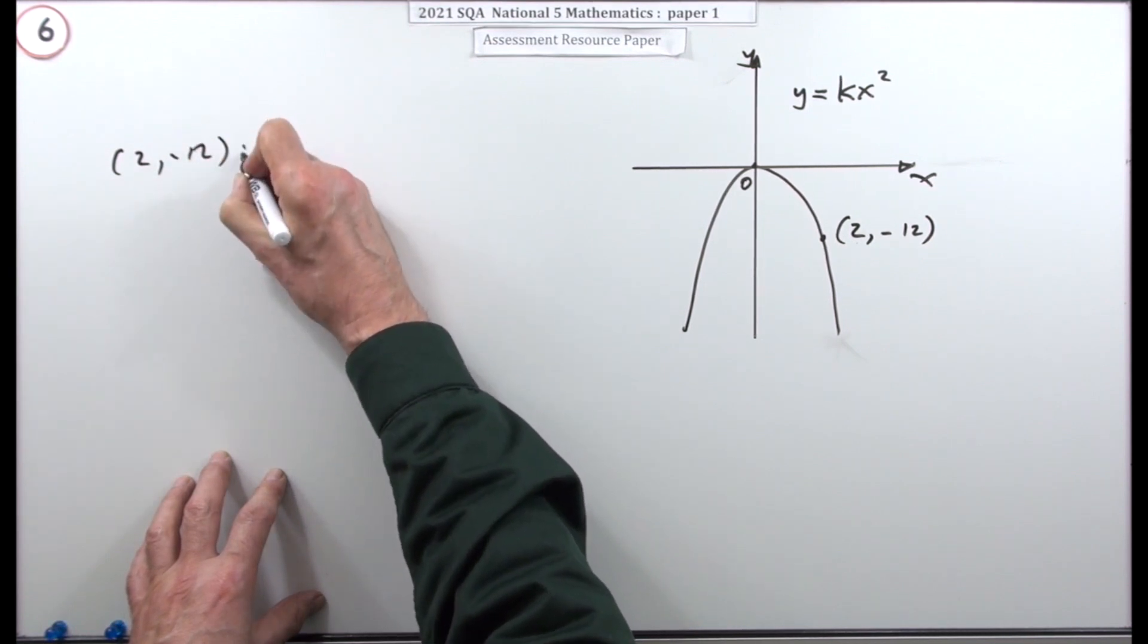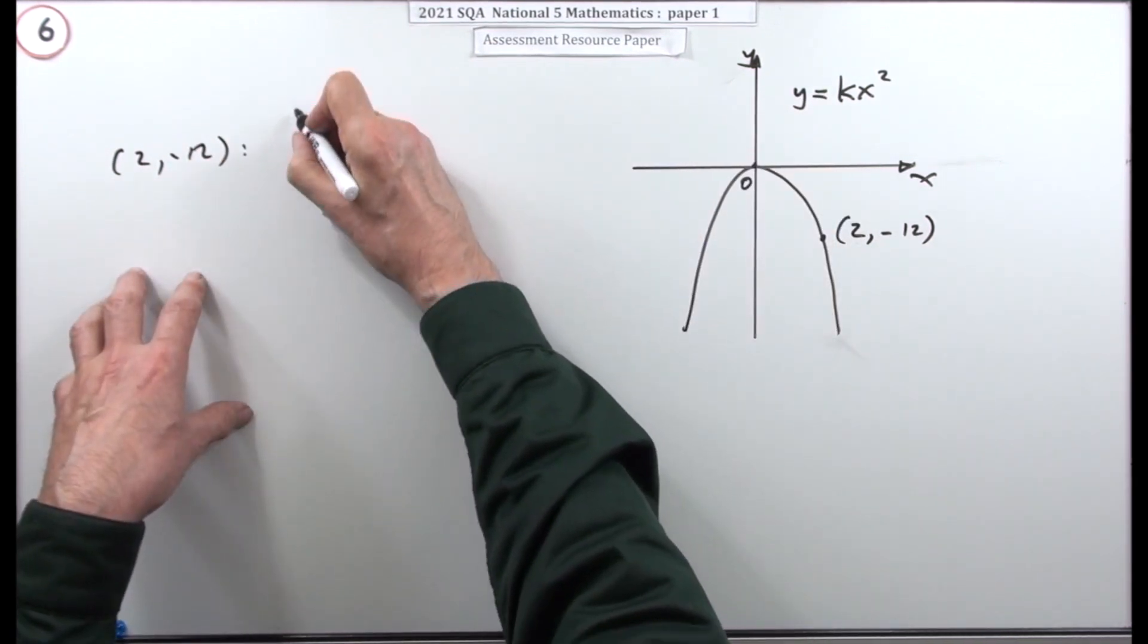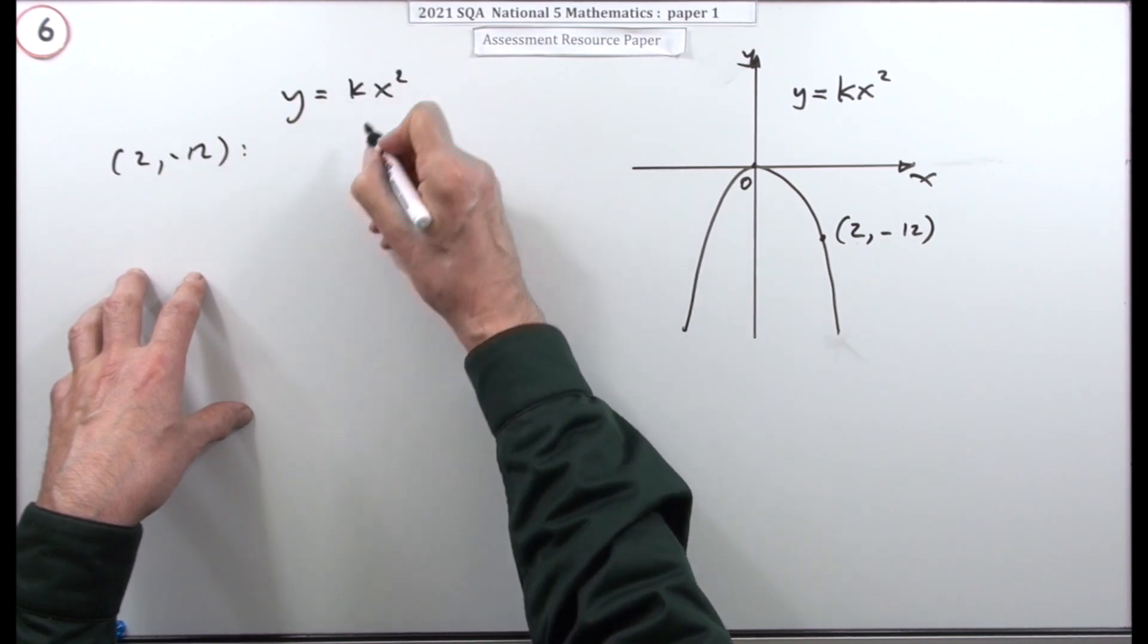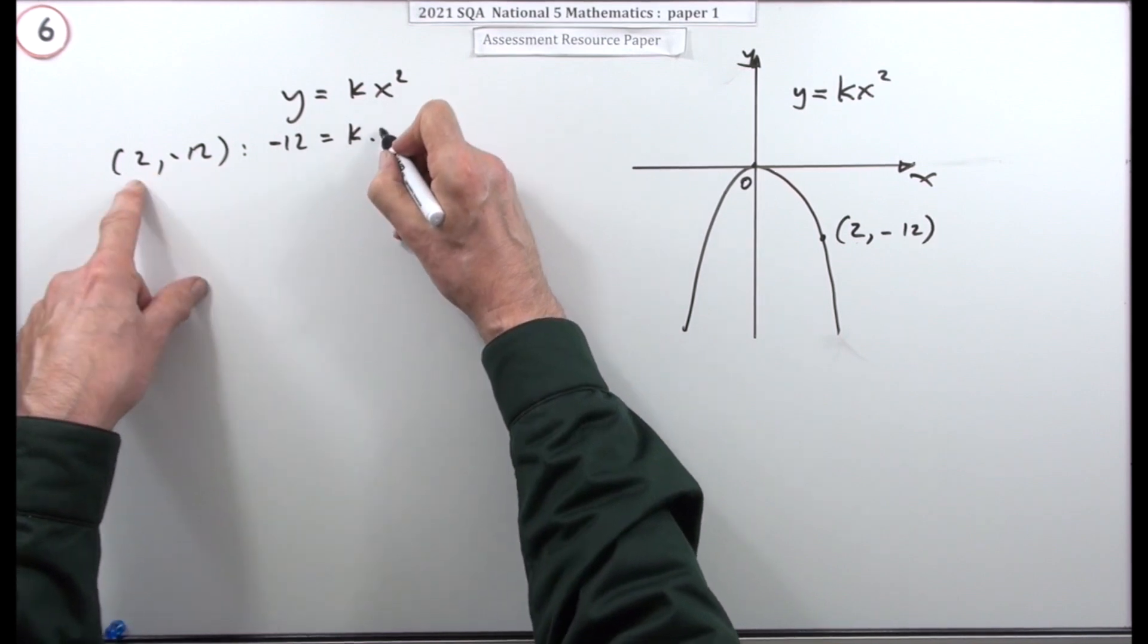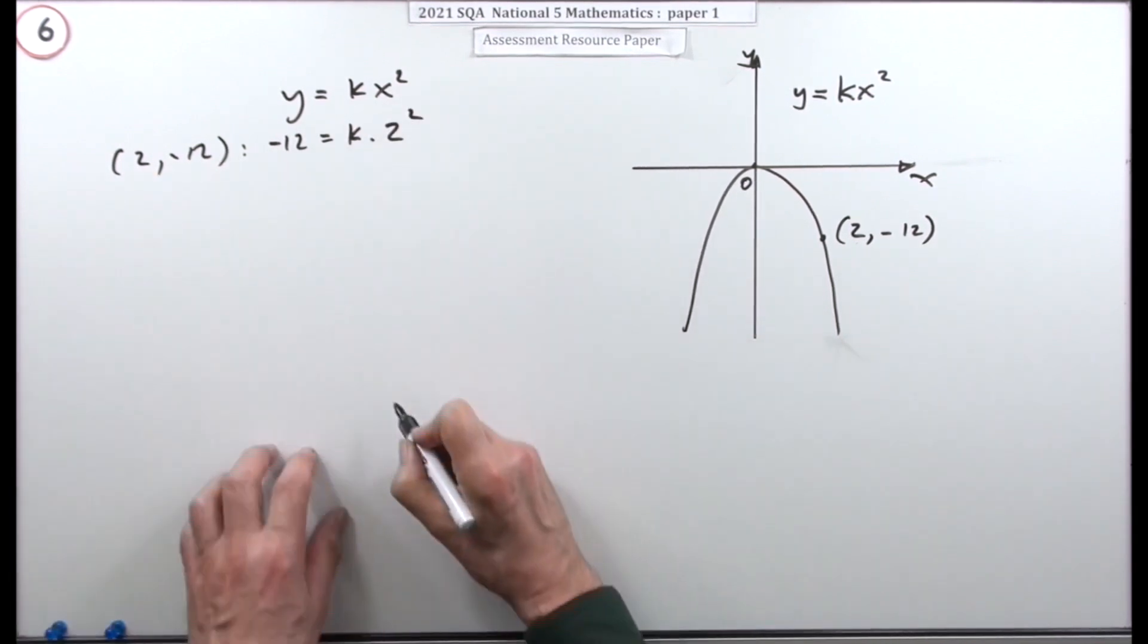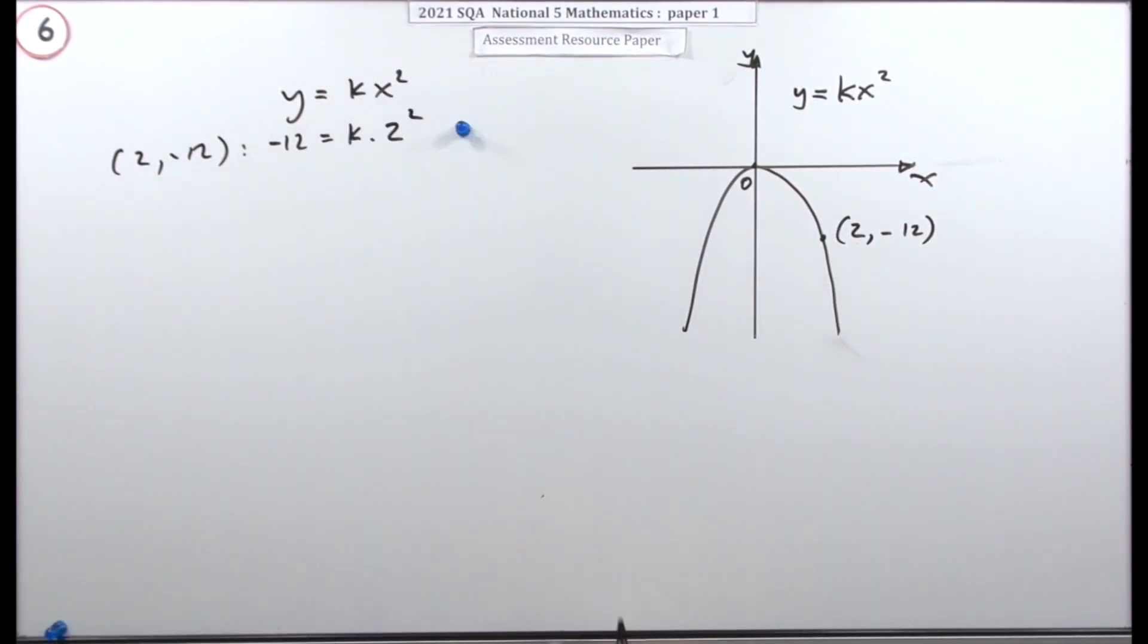If you've got the point (2, -12), that means putting it into y equals kx squared—the y coordinate, -12, must be k times the square of the x coordinate. Doing that gets a mark: substitute the coordinates into the equation because they must fit.